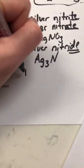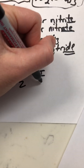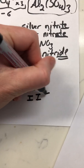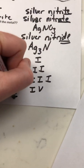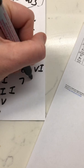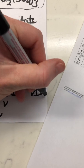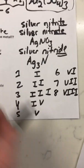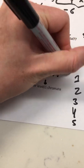Roman numerals: one is I, two is II, three is III, four is IV, five is V, six is VI, seven is VII, and eight is VIII. These Roman numerals indicate the charge of the metal. So in a name like 'lead(I) chromate,' the Roman numeral tells you the charge of the metal.